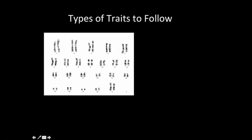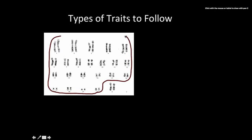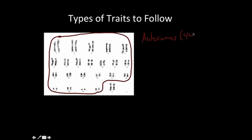So first it has to do with autosomes versus sex chromosomes. If we take a look here at human chromosomes, the first 44 chromosomes are autosomes. All of these here are chromosomes that are referred to as autosomes. So there are 44 autosomes if we're talking about humans.